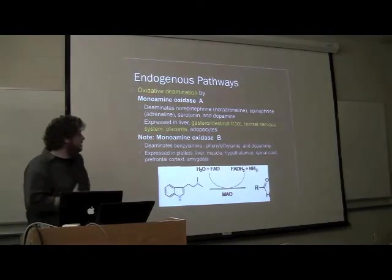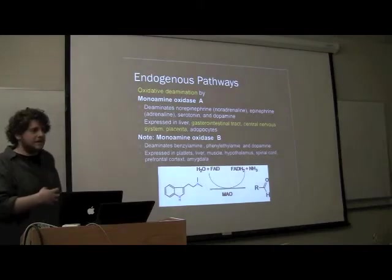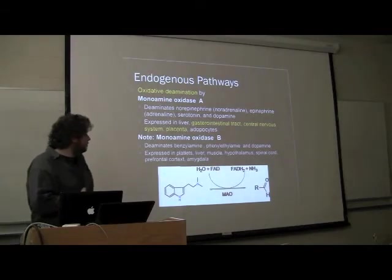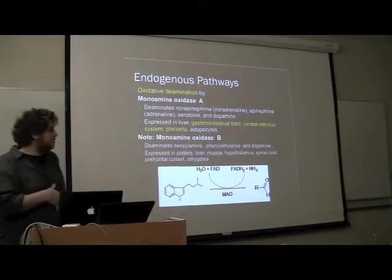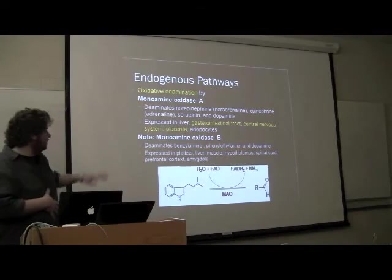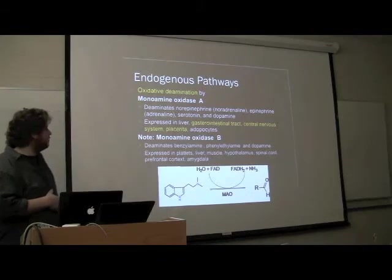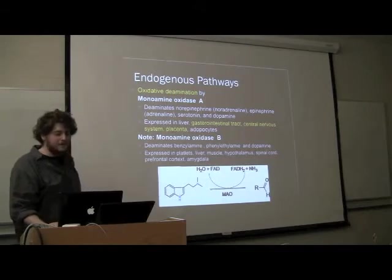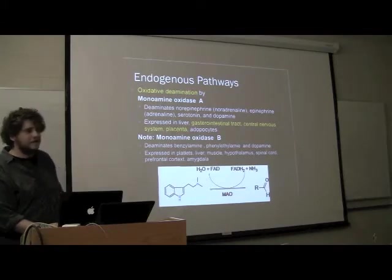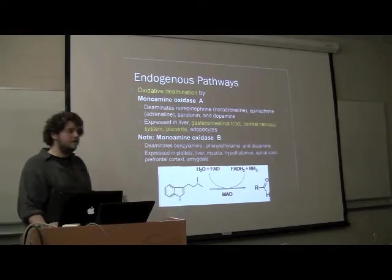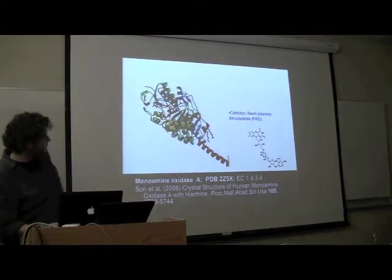Monoamine oxidase A is expressed throughout the gastrointestinal tract. Serotonin is a vasoconstrictor found in large concentrations in the digestive system — it's very primordial that way, in that the digestive system is more primordial than the nervous system. MAO-A is also found in the central nervous system and the placenta; it's very important to keep growing fetuses away from large amounts of neurotransmitters. Monoamine oxidase B mainly takes care of dopamine and some other phenethylamines like epinephrine and amphetamines.